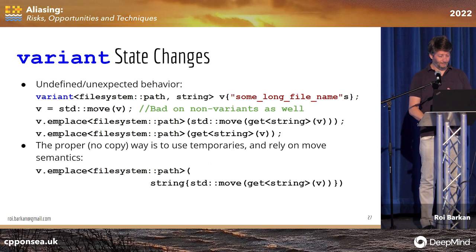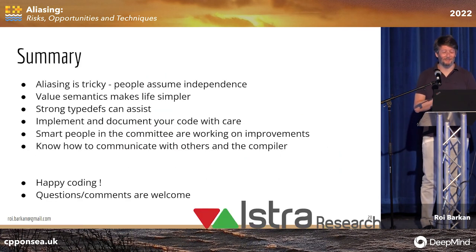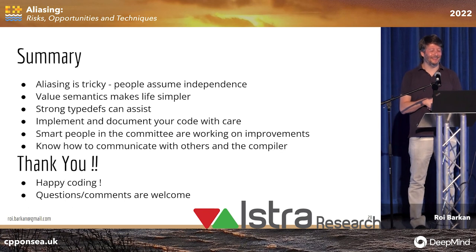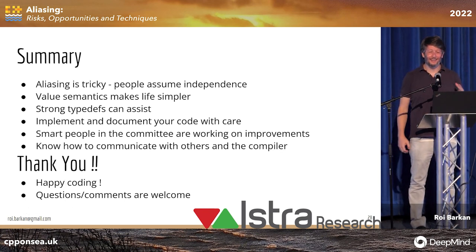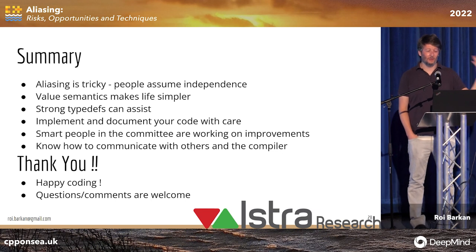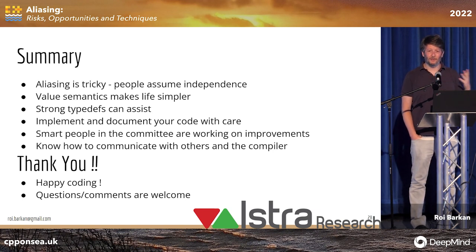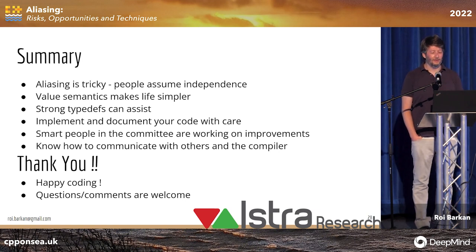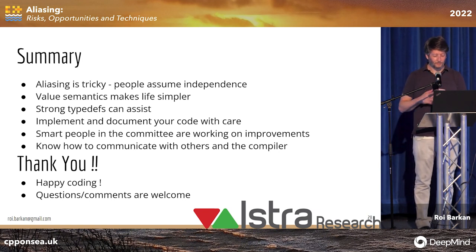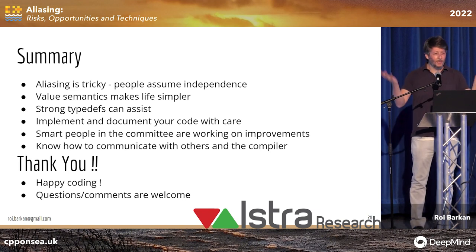This leads us through the summary slide. Aliasing is tricky because people inherently assume independence between variables, even when the code sometimes isn't independent. Value semantics are a good thing to work with and reason about. Strong typedefs are here to help us. If you write code, implement it with care, document it with care, and know that people in the committee are working to help us in the future. You should know how to communicate with others and with your compiler as you write your code.